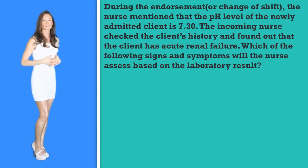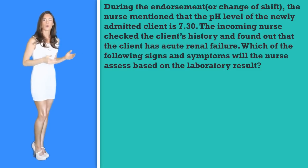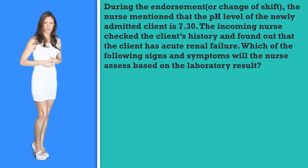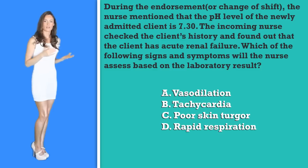This question is also asking if you can identify the signs of what it is like to be acidic. With NCLEX-style questions, you're not just answering one question — you're answering multiple questions. Question number two: during the endorsement or shift change, the nurse mentioned that the pH level of the newly admitted client is 7.3. The incoming nurse checked the client's history and found acute renal failure. Which of the following signs and symptoms will the nurse assess based on the laboratory result? A) vasodilation, B) tachycardia, C) poor skin turgor, or D) rapid respirations.